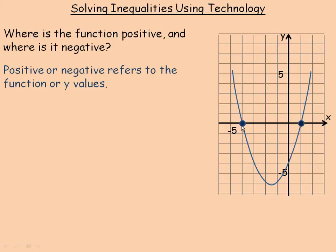When is x in a range where y is positive, and what values does x have when y is negative? On the graph, the green tracing shows a place where all the points have positive y coordinates. At the boundary point, y has a value of zero — it's neither positive nor negative — but immediately above it, y is positive.